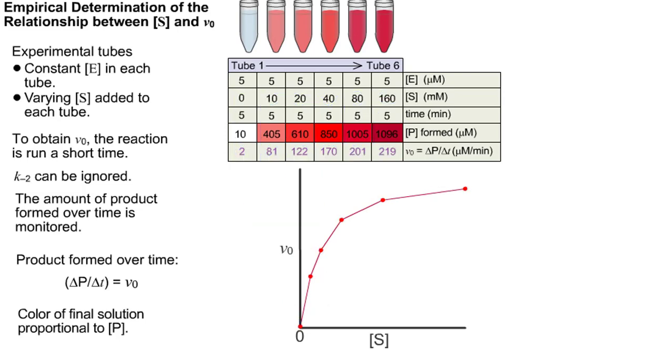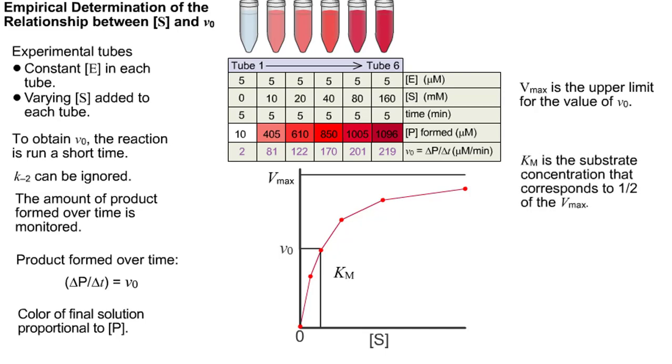The important kinetic parameters Vmax and Km can be estimated from this graph. The Vmax is the point where the enzyme is fully saturated and cannot achieve a higher initial velocity, and is therefore the upper limit for V0. The Km is the substrate concentration that corresponds to one half of the Vmax.